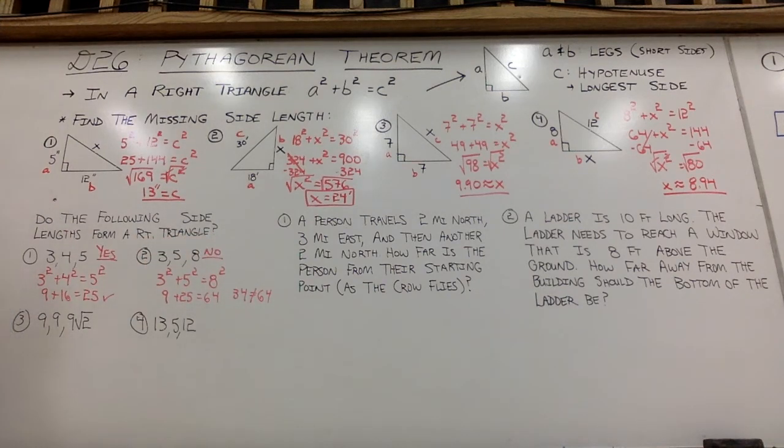All right, a little curveball here for you on the 9, 9, 9 square root of 2. Does 9 squared plus 9 squared equal 9 times the square root of 2 squared? Kind of a goofy one. 9 squared is 81. 9 squared is 81. And then when I square something, remember, I multiply by itself.